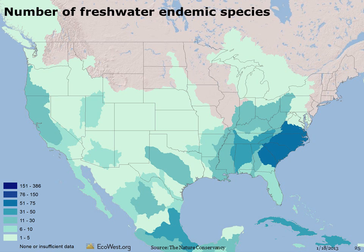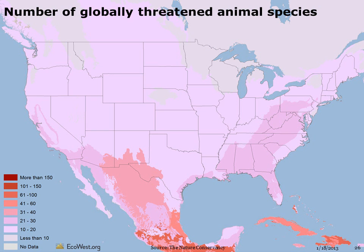In the US, freshwater endemism is greatest in Virginia, the Carolinas, and Georgia. Out west, hotspots include California, Oregon, Utah, and Arizona. In the US, the southwest, the foothills around California's Central Valley, and the southeast and Appalachians have the most threatened animals.